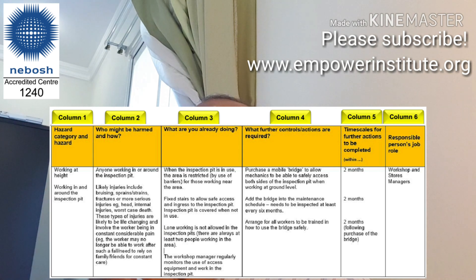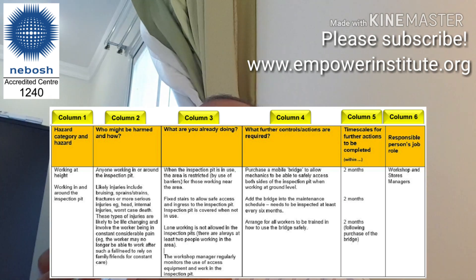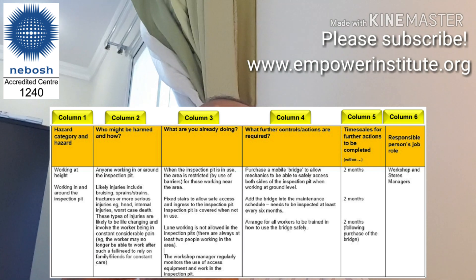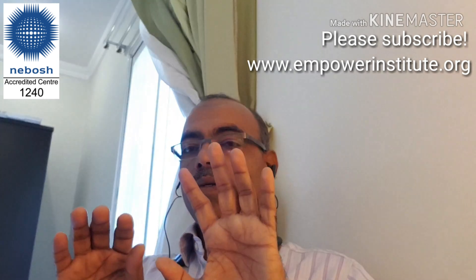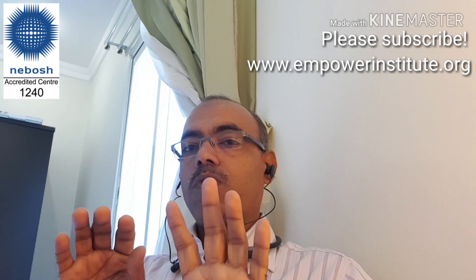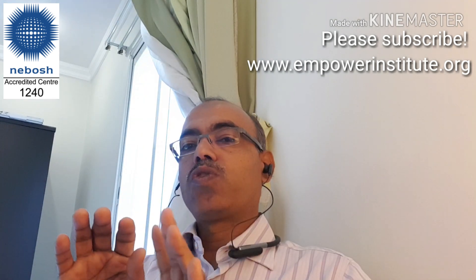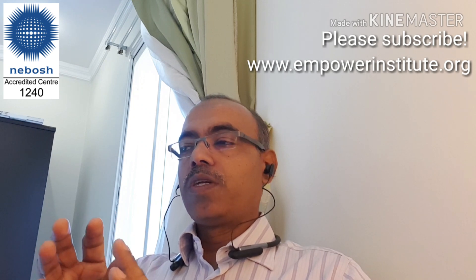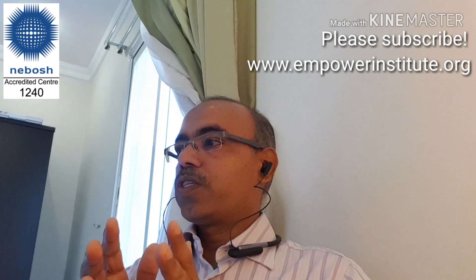For column four — further controls required — you might write: purchase a mobile bridge to allow mechanics to safely access both sides of the inspection pit when working at ground level; add the bridge to the maintenance schedule for inspection at least every six months; and arrange training for all workers on how to use the bridge safely. These address the residual risk not covered by existing controls.